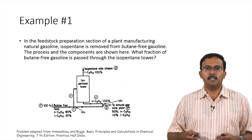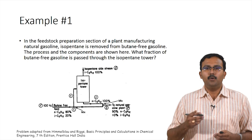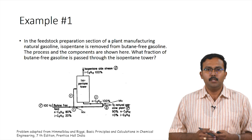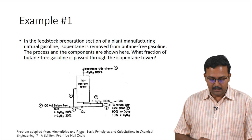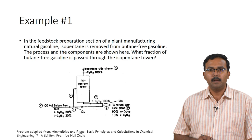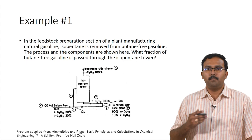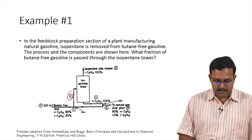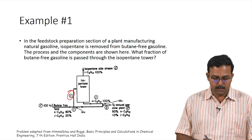In the feedstock preparation section of a plant manufacturing natural gasoline, isopentane is removed from butane-free gasoline. The process and components are shown here. What fraction of butane-free gasoline is passed through the isopentane tower? We have a feed of 100 kilograms of butane-free feed entering the isopentane tower. Some of this stream is taken out, bypasses the isopentane tower, and is mixed with the bottom stream. We need to calculate the fraction X that enters the tower and how much skips it.